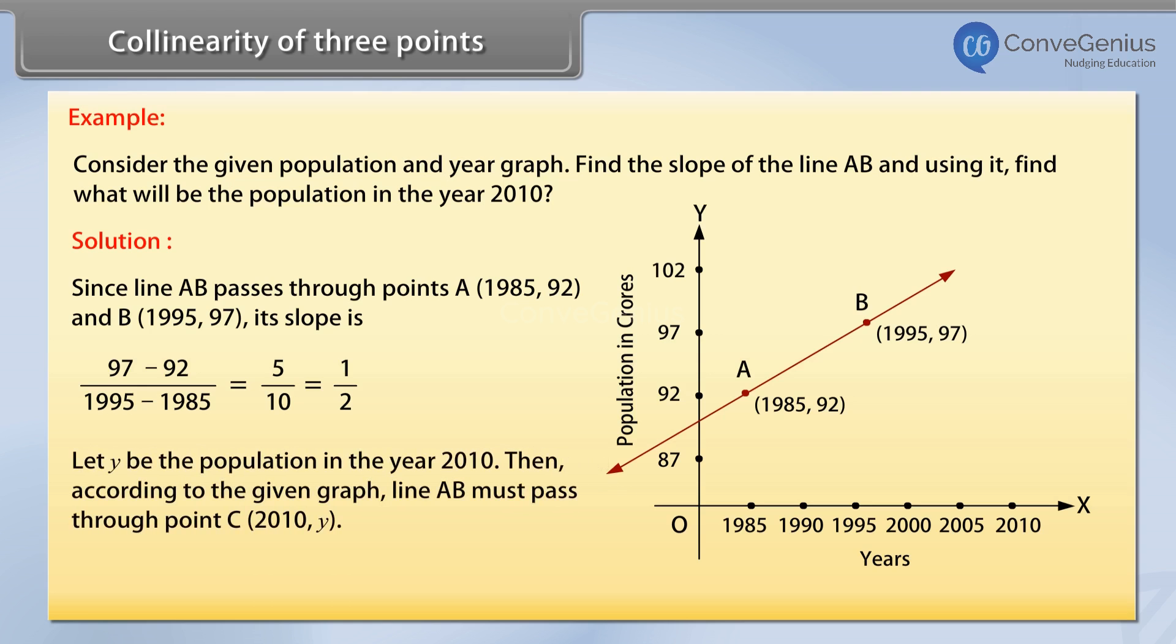Let Y be the population in the year 2010. Then according to the given graph, line AB must pass through point C, 2010, Y.